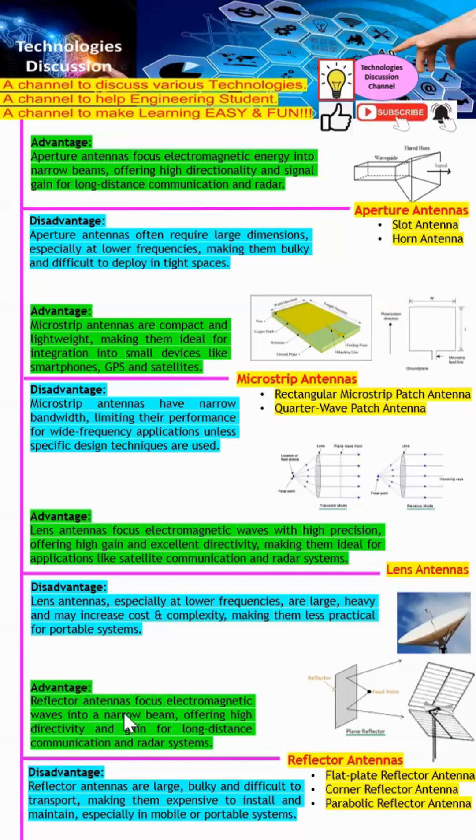Next will be reflector antenna. Reflector antennas also focus electromagnetic waves into a very narrow beam, giving them high directivity and high gain. However, reflector antennas are very bulky and difficult to transport, which becomes an issue when we want to meet portable system requirements.